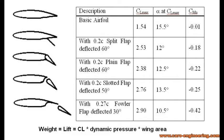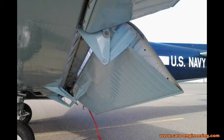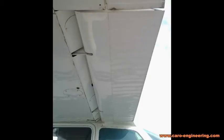A simple plain flap can produce a CL max of 2.38 at the same deflection, but with a higher pitching moment and a little less drag than a split flap. A hinged slotted flap is more effective — it can get to a CL max of 2.76 at 50 degrees deflection. But the best choice for increasing lift is a slotted Fowler flap. When the flap moves aft on rails and deflects down, it also increases the wing area. At 30 degrees, it reaches a CL max of up to 2.9, and it also creates the highest pitch-down moment.